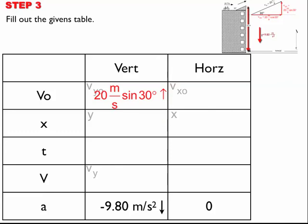If it goes to the right, make it positive. Left, make it negative. Kind of like math class. Horizontally, it's 20 meters per second, cosine 30. Going to the right, I'll make it positive.